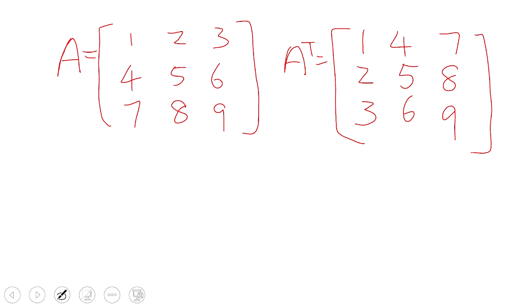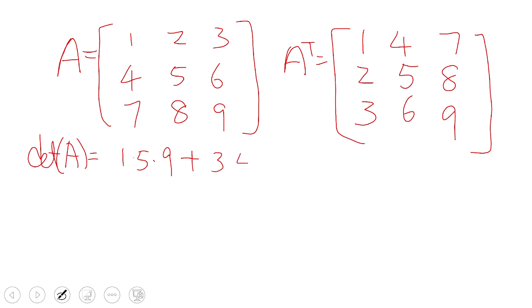The determinant of A is computed by selecting three numbers, one from each row. The first positive term is 1×5×9, the second is 3×4×8, and the third is 2×6×7. Those are the three positive terms. The negative terms start from 3×5×7, minus 1×6×8, and minus 2×4×9.